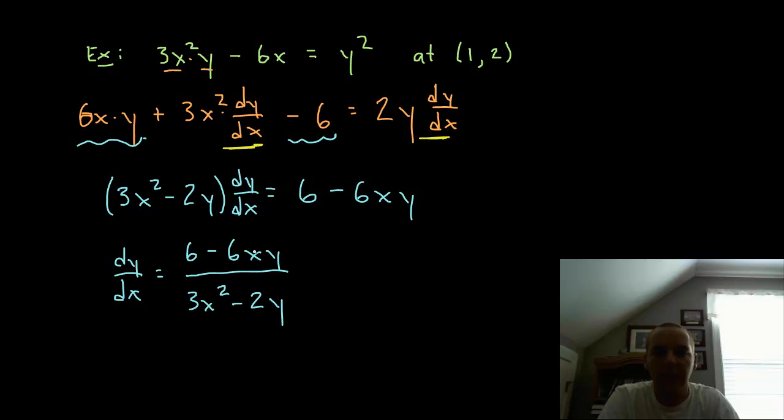So now this will give me the slope at any given xy point, and luckily they provide one for us, this will be the point of tangency, (1, 2). So if we evaluate this at (1, 2), then we would get dy dx equals, so a little mental math here, 6 times 1 times 2 is 12, so that's negative 6 divided by 3 times 1 is 3 minus 4 is negative 1, so we get a slope of positive 6.